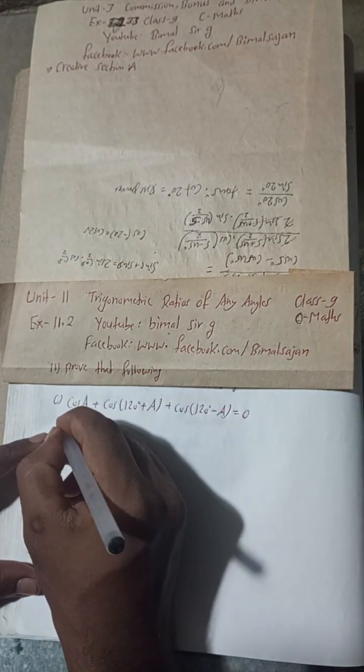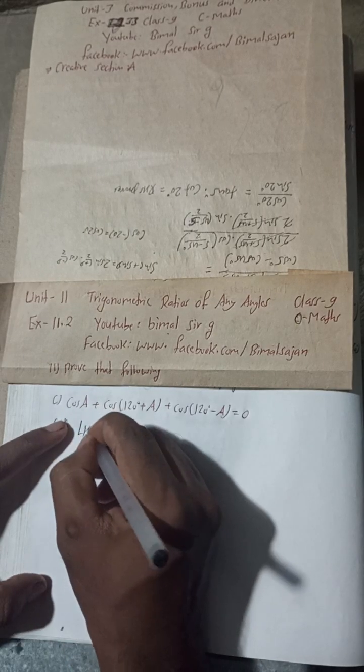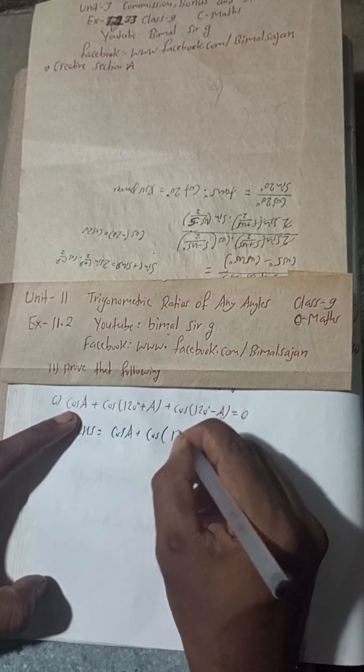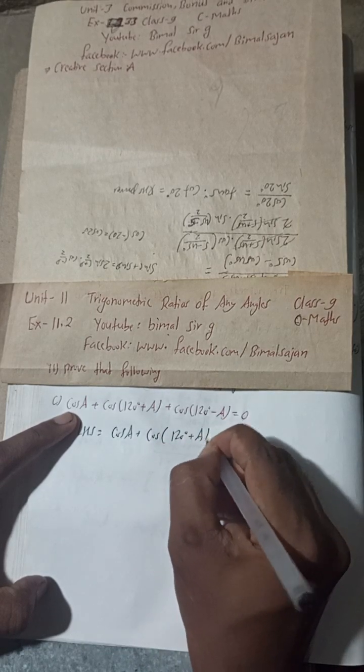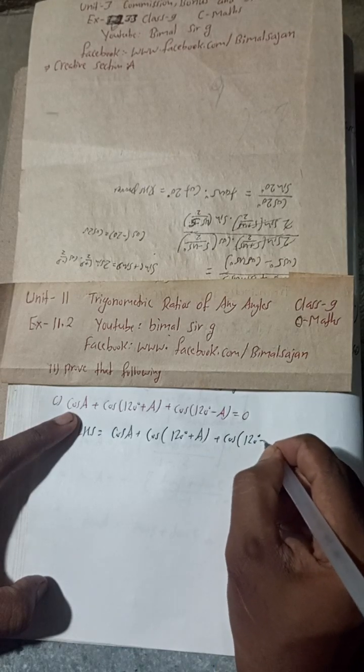Here is solution. LHS is equal to Cos A plus Cos 120 degree plus A plus Cos 120 degree minus A.